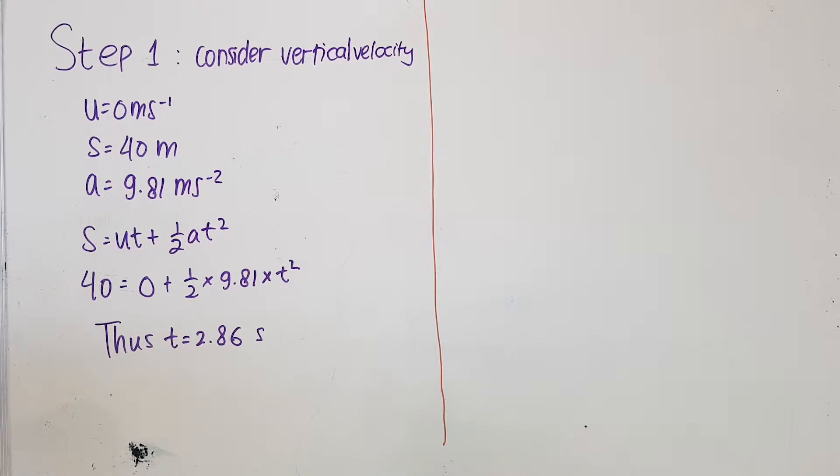Then, we use the formula we've learned before, which is distance equals initial velocity multiply by time plus 0.5 acceleration time square. Put the numbers in, and you'll find that the time that the stone takes to reach the ground is 2.86 second.